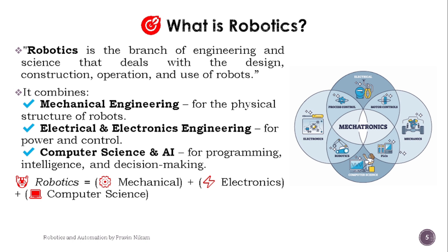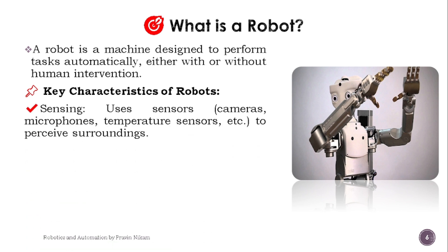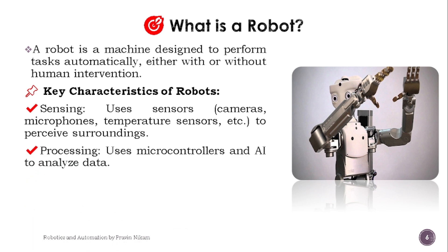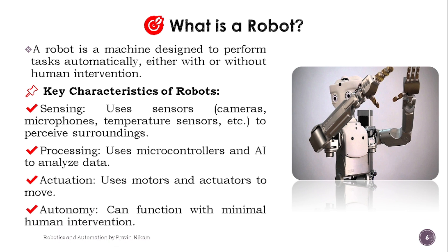Robotics means a combination of mechanical engineering, electronics and electrical engineering, and computer science. A robot is a machine designed to perform tasks automatically, either with or without human intervention. Key characteristics of robots include: sensing — using sensors such as cameras, microphones, and temperature sensors to perceive surroundings; processing — using microcontrollers and AI to analyze data; actuation — using motors and actuators to move; and autonomy — the ability to function with minimal human intervention.